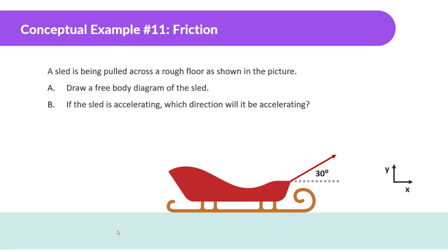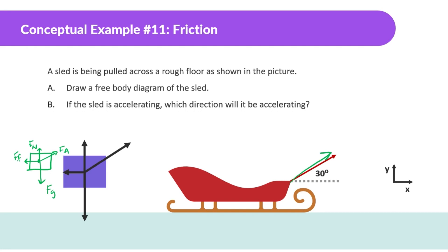Conceptual example 11: A sled is being pulled across a rough floor. Draw a free body diagram of the sled. We start with force of gravity downward, then a normal force upward — though not as large since the sled is being pulled at an angle. There's a force applied in the direction of pulling, and then friction is going to be trying to prevent its motion in the opposite direction. If the sled is accelerating, it will be accelerating to the right, since the applied force in the x-direction drives it to the right.